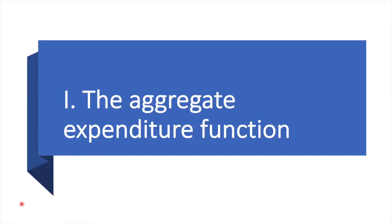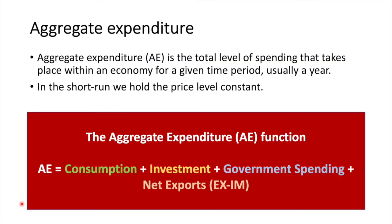Aggregate expenditure is the total level of spending that takes place within an economy for a given time period, usually a year. In the short run, we hold the price level constant. This is different to our aggregate demand and aggregate supply model where we view real GDP against the price level. In the aggregate expenditure model, also called the Keynesian aggregate expenditure model, we plot expenditure against income. Aggregate expenditure is equal to consumption spending plus investment plus government spending plus the value of net exports. Let's look at each of these components and the determinants that influence them.